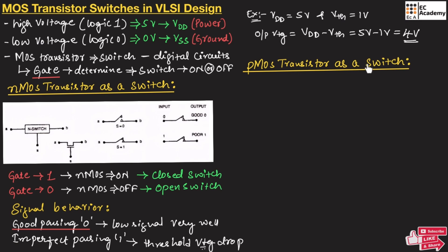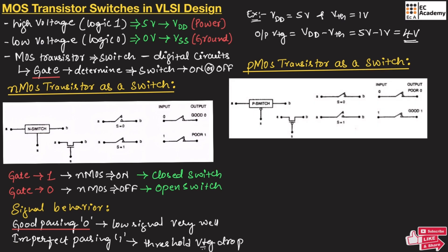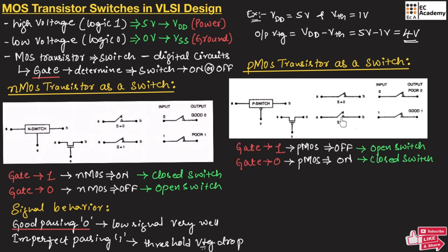Now let us understand the working of the PMOS transistor as a switch. This is the representation of a P-switch, where the gate acts as the switch control. When the gate terminal is applied with logic 1, the PMOS transistor will be off and act as an open switch. When the gate terminal is applied with logic 0, the PMOS will be on and act as a closed switch.